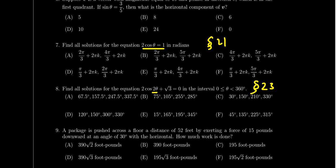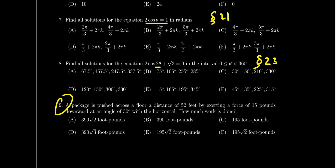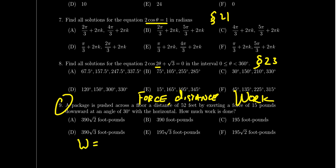Question nine is a story problem about force and work. The key formula is that work equals the dot product of the force vector and the distance (displacement) vector. If the vectors are in algebraic form, compute the dot product directly. If given geometrically, use the formula: work equals the magnitude of F times the magnitude of D times the cosine of the angle between them. This was covered in Lecture 31 on dot products.